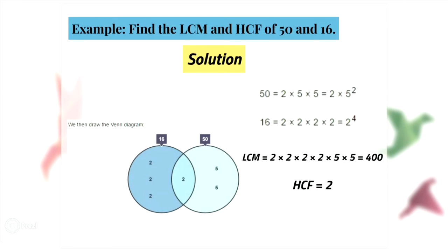In the second problem, we must find the LCM and HCF of 50 and 60. Firstly, write the numbers in prime factor form: 50 equals 2 multiplied by 5 squared, and 60 equals 2 to the power of 2 times 3 times 5. Then we draw the Venn diagram. As both numbers have 2 as a factor, this goes in the middle. The remaining factors go in the respective circles. The LCM is found by multiplying all of the numbers in the Venn diagram together, giving LCM equals 2 squared times 5 squared, which equals 300. The HCF is found by multiplying together all of the numbers in the overlapping section. So HCF equals 2.